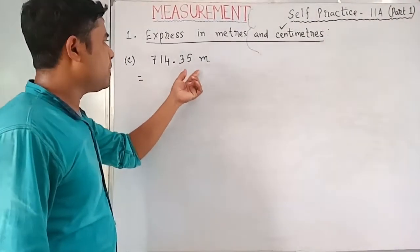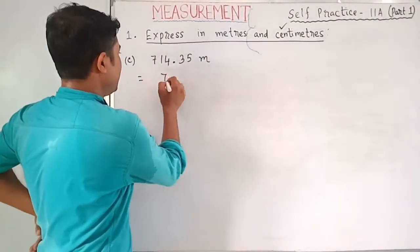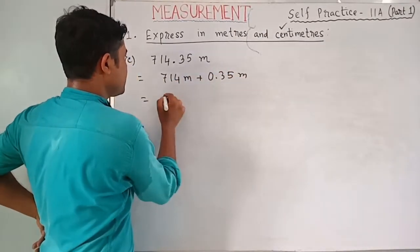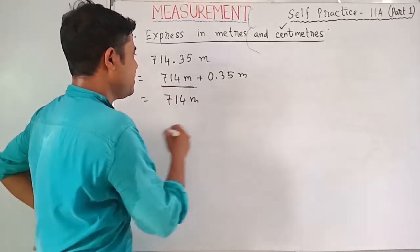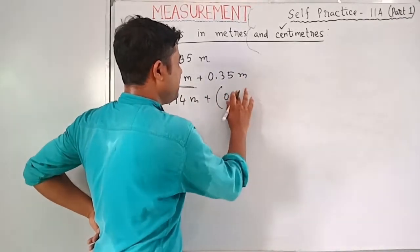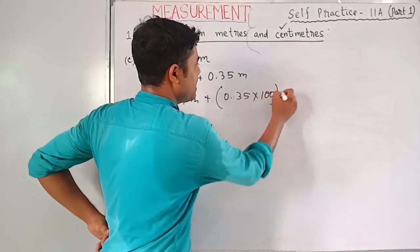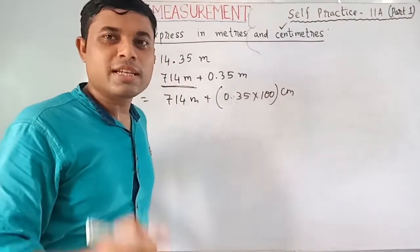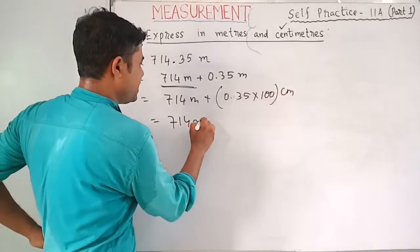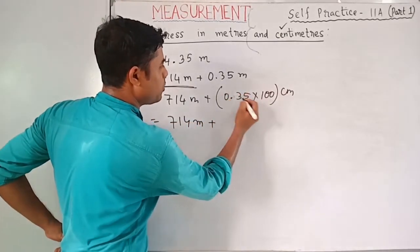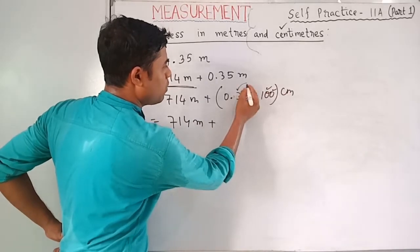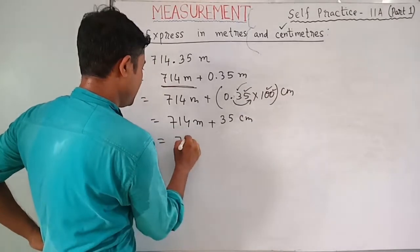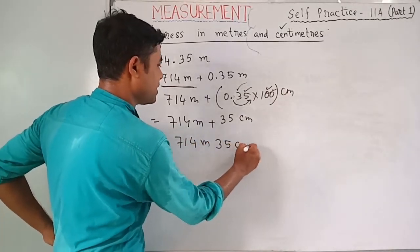Next: 740.35 meters. Separate: 740 meters plus 0.35 meters. Convert 0.35 to centimeters: 0.35 × 100 — move decimal two places to the right — gives 35 centimeters. Answer: 740 meters 35 centimeters.